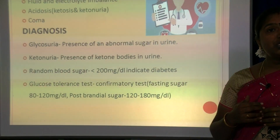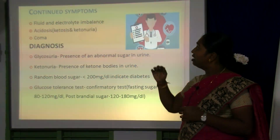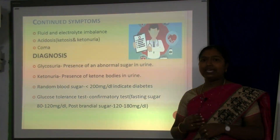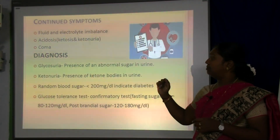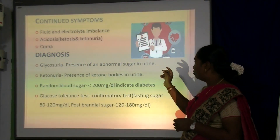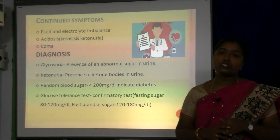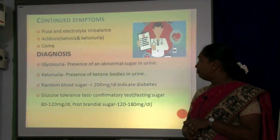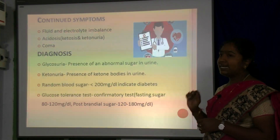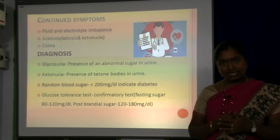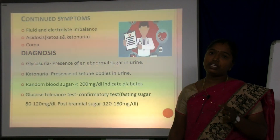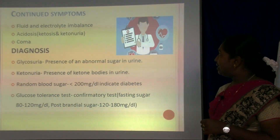Continued symptoms include cellular, fluid and electrolyte imbalance, acidosis — that is ketosis and ketonuria — and coma. For diagnosis, the preliminary and confirmatory tests include: glycosuria — presence of abnormal glucose in urine; ketonuria — presence of ketone bodies in urine; and random blood sugar above 200 mg/dL, which indicates diabetes. The glucose tolerance test is the confirmatory test, where the fasting level is 80–120 mg/dL and the post-prandial level is around 180 mg/dL.